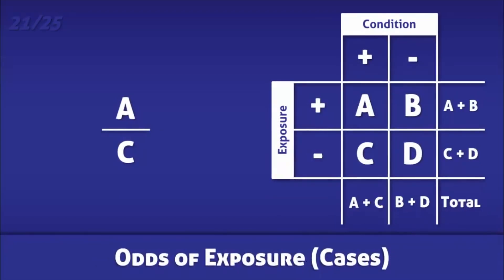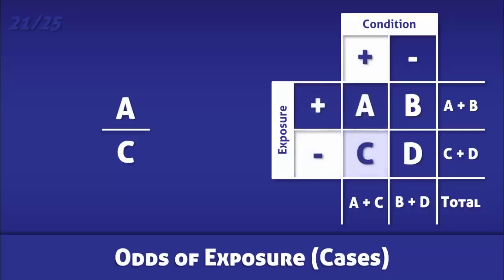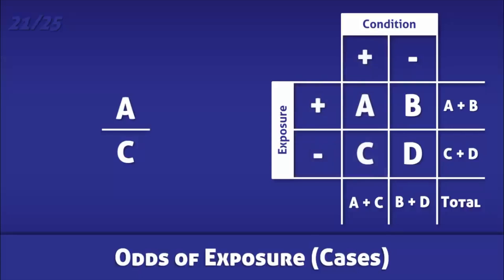The odds of exposure amongst cases is the odds that an individual with a condition was exposed to a particular risk factor. It is calculated by dividing the number of people with the condition who were exposed to the risk factor by the number of people with the condition who were not exposed.